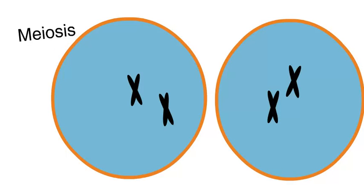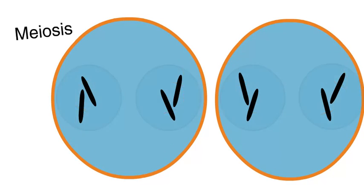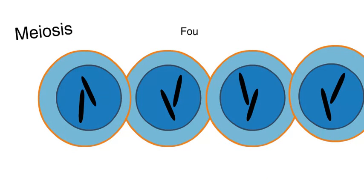Meiosis isn't over yet. Another division still needs to occur. The sister chromatids are separated, and four new nuclei form. This produces four different haploid gametes.